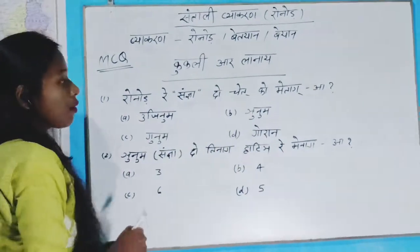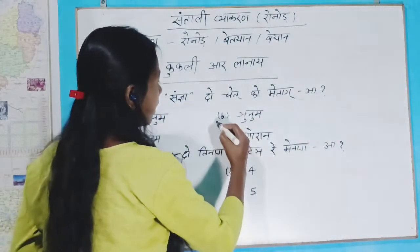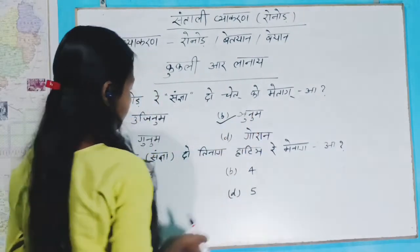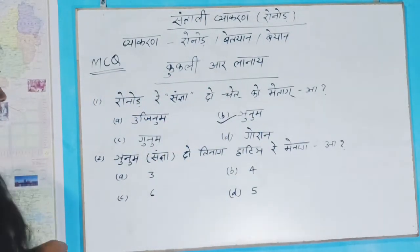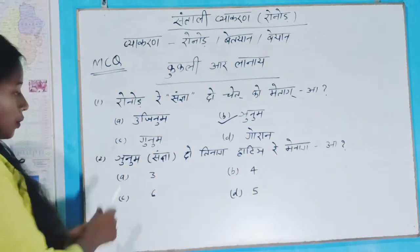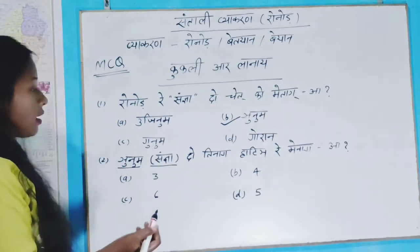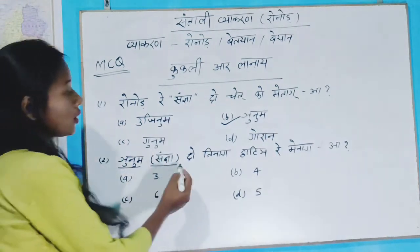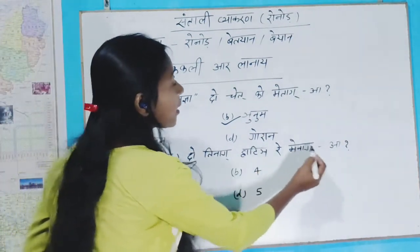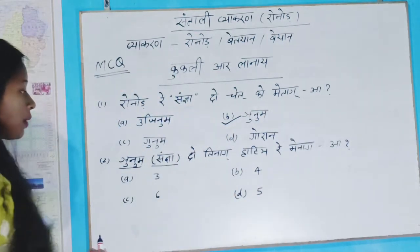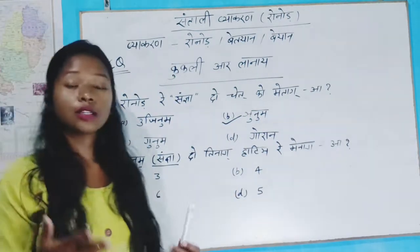So the answer is younum. The second question is younum. It's Shangya. I have two three hearts. Younum, Shangya, three hearts.